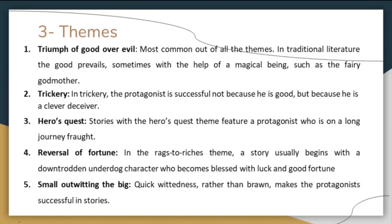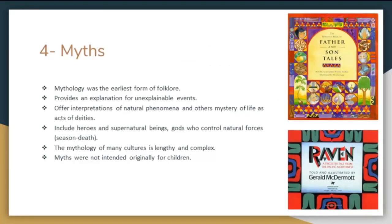Next, we have the themes of traditional literature. These are the main themes. Triumph of good over evil — good prevails and evil doesn't; evil always has an undying end. Trickery — the protagonist is successful not because he is good, but because he is a clever deceiver. For example, Puss in Boots is a trickster. Hero's Quest — stories featuring a protagonist who is on a long journey. Reversal of Fortune — in the rags-to-riches theme, a story usually begins with a downtrodden underdog who becomes blessed with luck and good fortune. Small outwitting the big — wit rather than brawn makes the protagonist successful; the little guy can defeat the big guy.